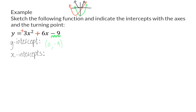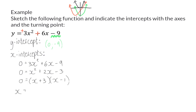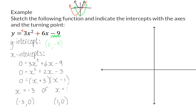To determine the two x-intercepts, we start by changing the y-value in the equation to 0. Next, we can divide the whole equation by 3 to simplify, then factorize to get x equals minus 3 or x equals 1. Although we still need to determine the turning point coordinate, we already have an idea of what the graph looks like: the first x-intercept is negative, the y-intercept is negative, and the next x-intercept is positive.